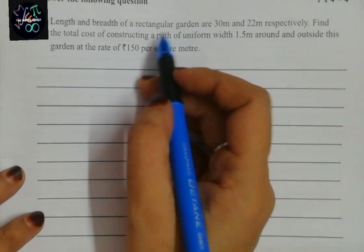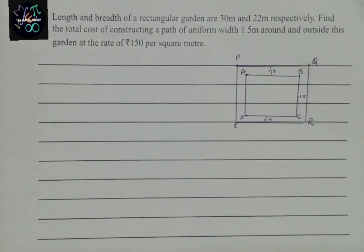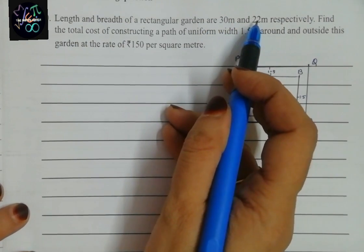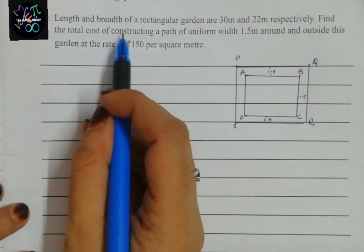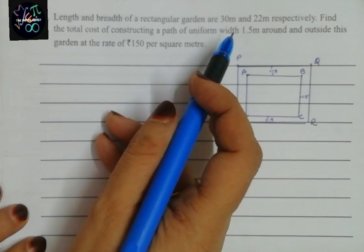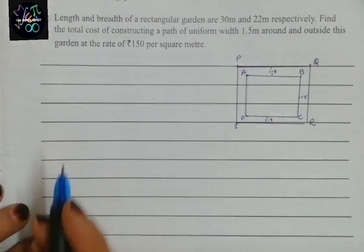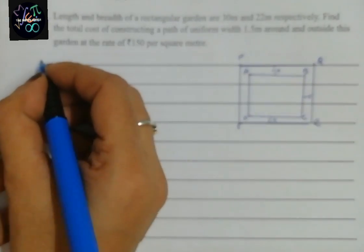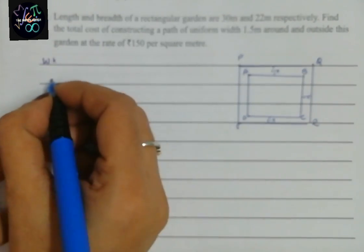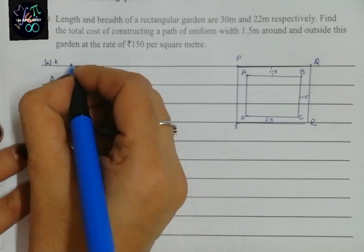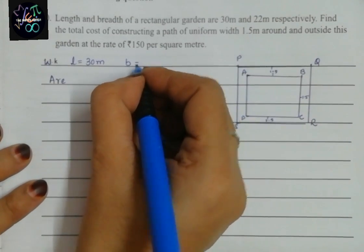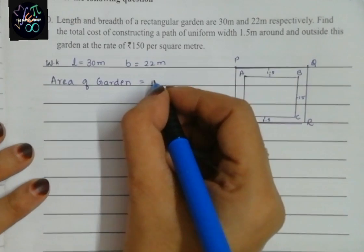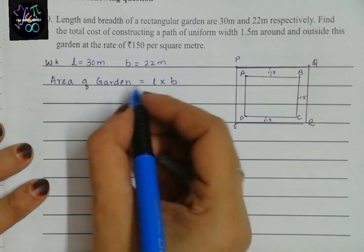Question number 30: the length and breadth of a rectangular garden are 30 meters and 20 meters respectively. Find the total cost of constructing a path of uniform width 1.5 meters around and outside this garden at the rate of rupees 150 per square meter. First we will find the area of the garden — length is 30 m and breadth is 22 m.